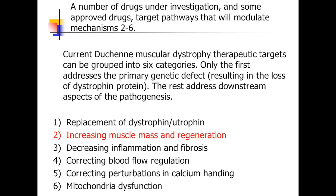In terms of the big picture, the concept of combination therapies for Duchenne Muscular Dystrophy targets a number of different defective pathways in this disease. Obviously, putting back dystrophin and trying to upregulate utrophin is the most direct way to deal with the disease. But these other pathways could be equally advantageous, especially when used in combination. First and foremost on that list is increasing muscle mass and regeneration.